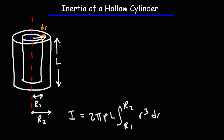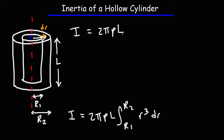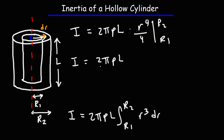We find the integral of r to the third, which gives r to the fourth over 4, integrated from r1 to r2. Moving the 4 to the front, we have 2π ρ l over 4, and then r to the fourth evaluated from r1 to r2.